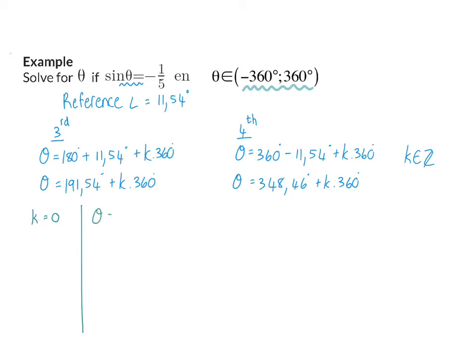With k equal to zero, in our third quadrant we will have the option 191.54 degrees, and this is in the given interval. In our fourth quadrant, we will have 348.46 degrees, which is also in our interval.